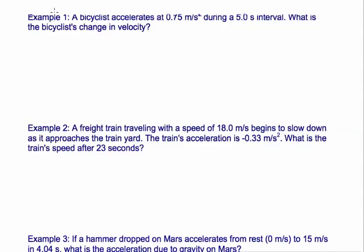Okay, let's look at some of these examples using acceleration. So example one says that a bicyclist accelerates at 0.75 meters per second squared during a five-second interval. So that means the time is five seconds.